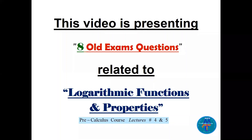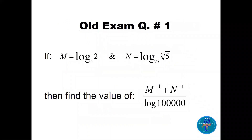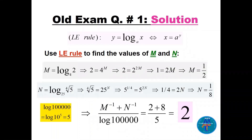This video presents eight old exam questions related to logarithmic functions and properties, covering lectures four and five. The first question: given that M equals log base 4 of 2, and N equals log base 25 of the fourth root of 5, find the value of the expression M to the power minus one plus N to the power minus one, divided by log base ten of one hundred thousand.